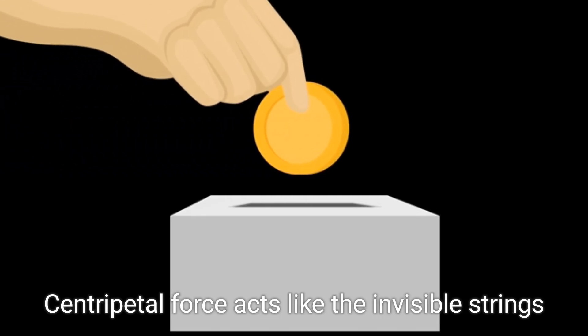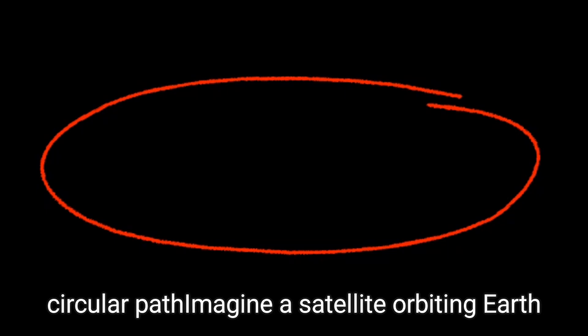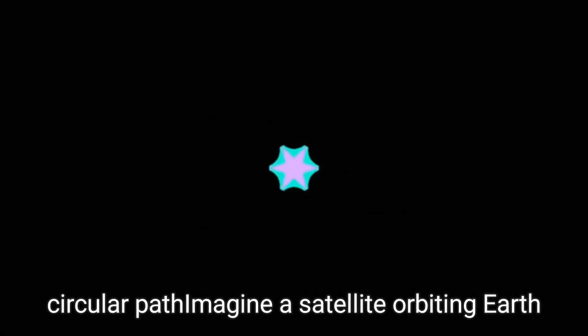Centripetal force acts like the invisible strings of a marionette, always pulling an object toward the center of its circular path. Imagine a satellite orbiting Earth. This constant inward pull keeps it from flying off into space.